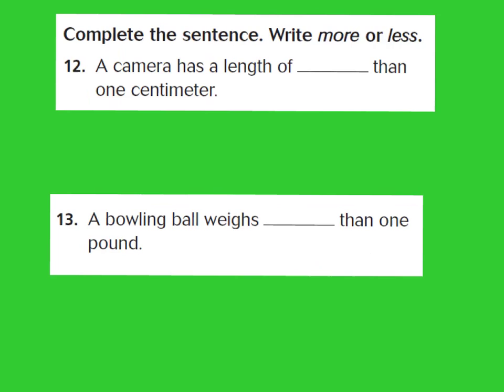Let's look at questions 12 and 13. A camera has a length of more than one centimeter, because our benchmark is that one centimeter is about the width of your finger, and a camera is obviously more than that. On number 13, a bowling ball weighs more than one pound — if you've ever picked one up at the bowling alley, it's pretty heavy, and a pound is about the weight of one loaf of bread.